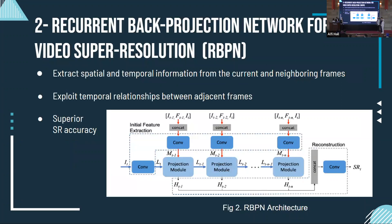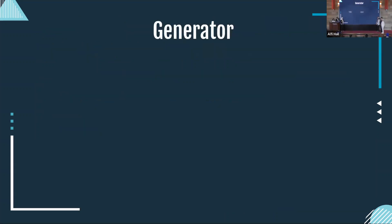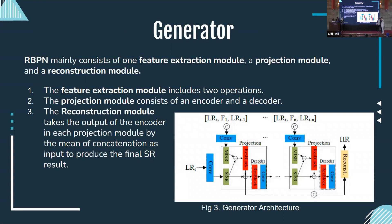For the generator, we will use the Recurrent Back-Projection Network. The basic concept behind back-projection is to iteratively calculate the residual image as a reconstruction error between the target image and a set of neighboring frames — in this case, six neighboring frames, though we reduced that number in our model. It also exploits the temporal relationship between adjacent frames. RBPN achieves superior results by combining the benefits of multi-image super-resolution and back-projection.